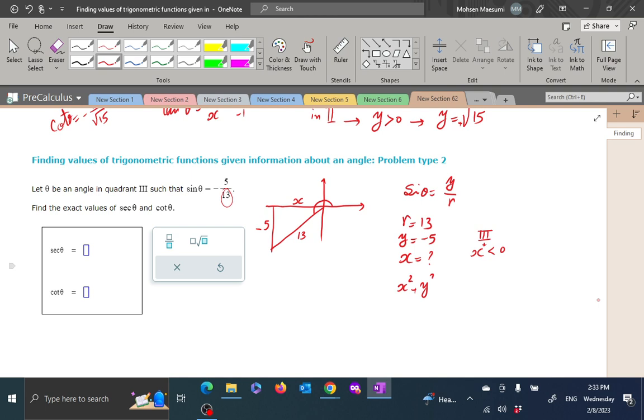So x squared plus y squared is r squared. x squared becomes, 13 squared is 169, 5 squared is 25. Subtract, make 144. Take square root. But we have plus or minus, which square root? We have to take plus or minus square root of 144. Which one? Plus or minus, which one? Well, our x is negative. So here, since you are supposed to be in quadrant 3, that also gives you a hint. Better not to make a mistake here.